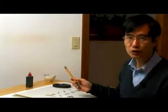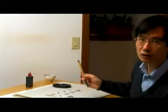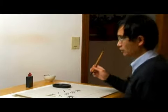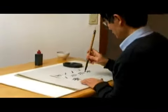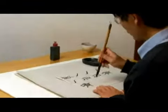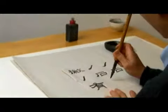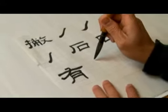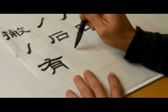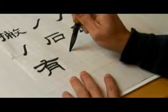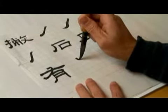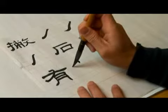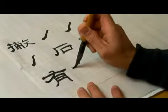The next character that demonstrates the pie stroke is wen — that's script, or characters. Wen, with a dot to start, and then a horizontal.